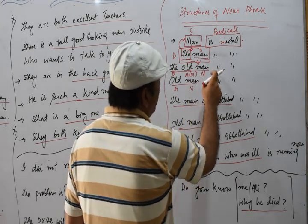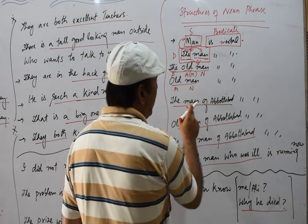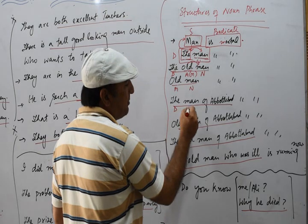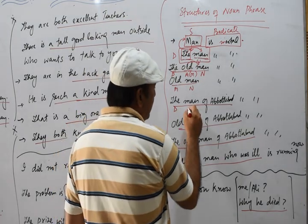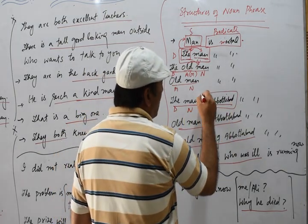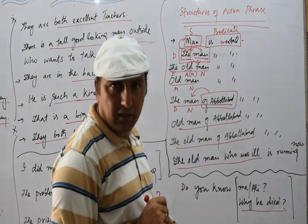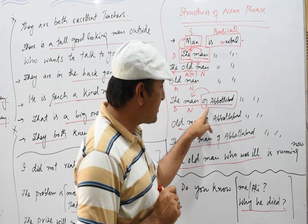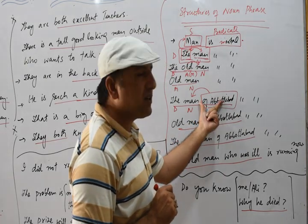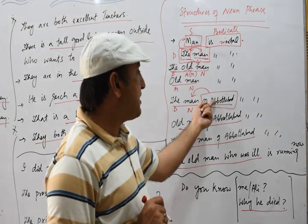Then we have 'the man of [the village].' Once again we have the determiner 'the,' the keyword noun 'man,' and 'of [village]' which tells us about man. Though it is a prepositional phrase, it also works as an adjective phrase because it tells us about man.